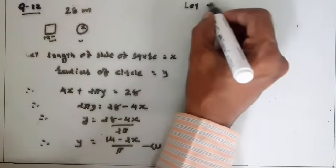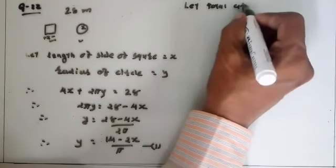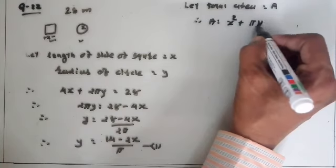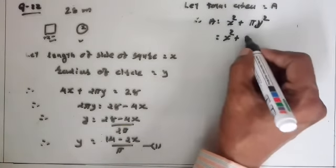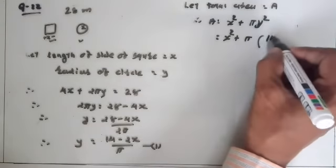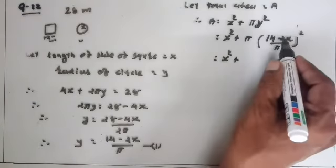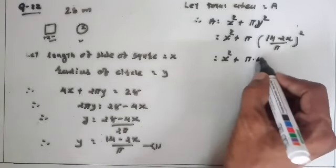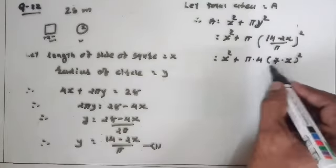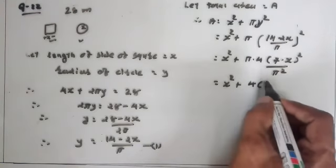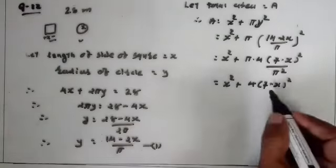Let total area of the square and circle equal A. Therefore A = x² + πy². Substituting y = (14 − 2x)/π, we get A = x² + π · (14 − 2x)² / π² = x² + (14 − 2x)² / π = x² + 4(7 − x)² / π.